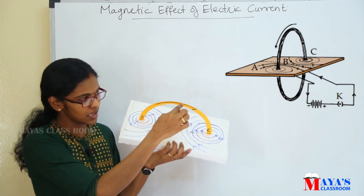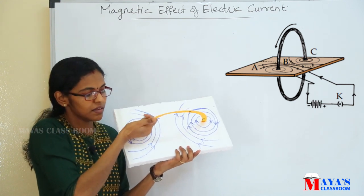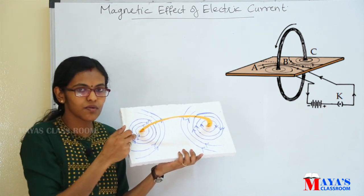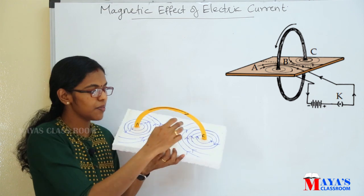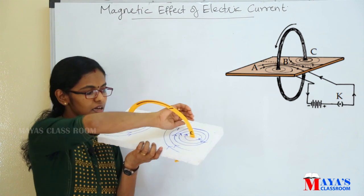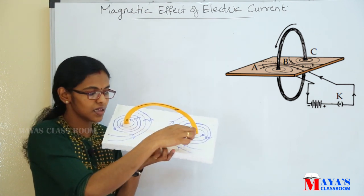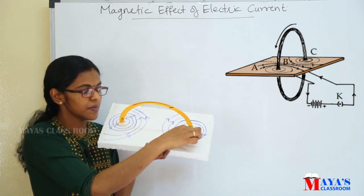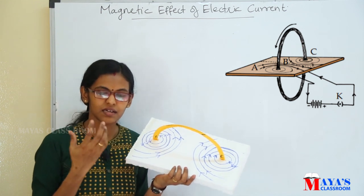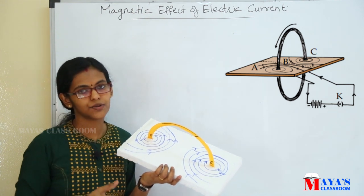If we apply the right-hand rule here, we apply the right-hand thumb to the other fingers. Then the current direction changes, and the magnetic field direction in the center also changes accordingly.